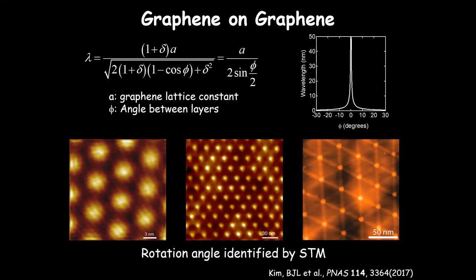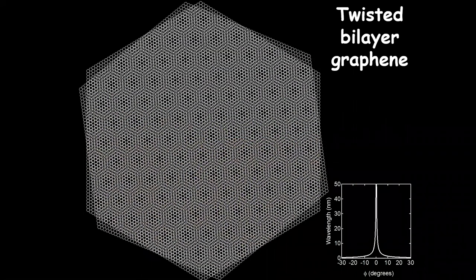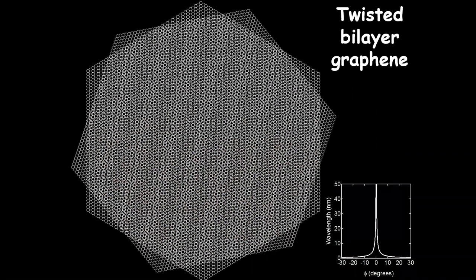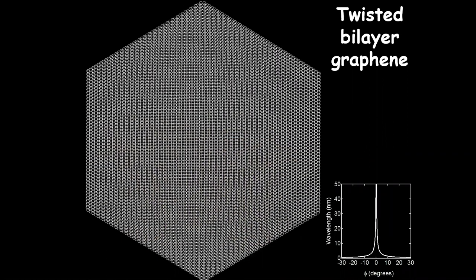When you put graphene on graphene, the moiré formula simplifies because delta is zero — no lattice mismatch. The wavelength only depends on the twist angle and actually diverges when phi goes to zero, so you can make any arbitrary length moiré pattern. Here are examples: five nanometer periodicity, ~20 nanometer, ~50 nanometer periodicity — we've even made ones up to ~400 nanometers. The moiré pattern stays always aligned and doesn't rotate like graphene on boron nitride.